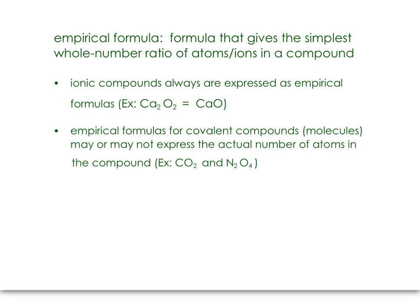Now for covalent compounds or molecules, the chemical formula may or may not be empirical. In carbon dioxide, CO2, that chemical formula is empirical — it is the smallest whole number ratio of atoms possible for that molecule. However, in dinitrogen tetroxide, that is not an empirical formula because we could reduce or simplify our subscripts to get NO2.